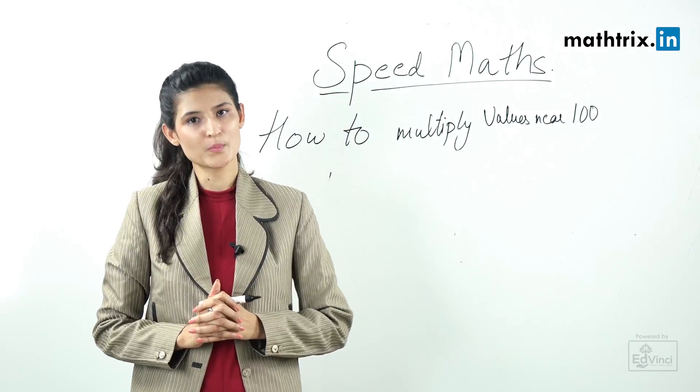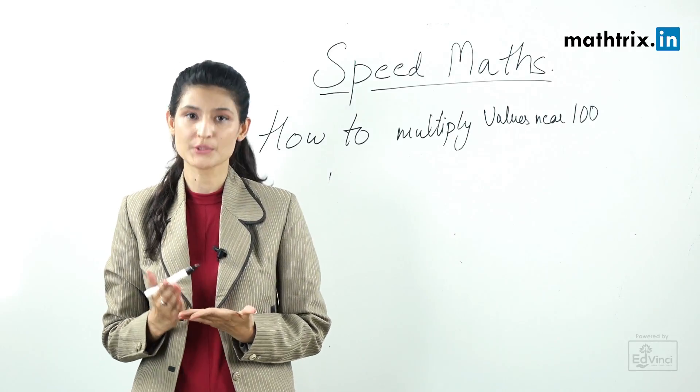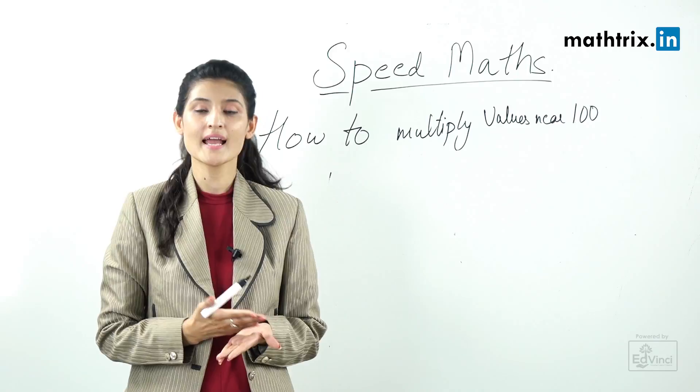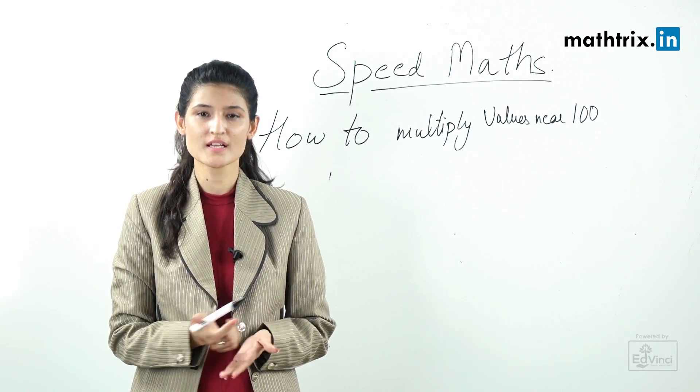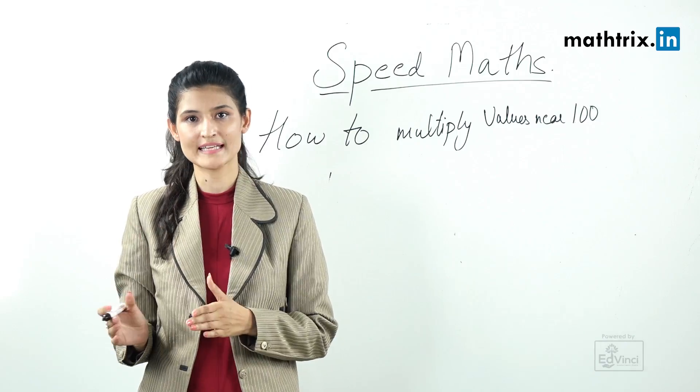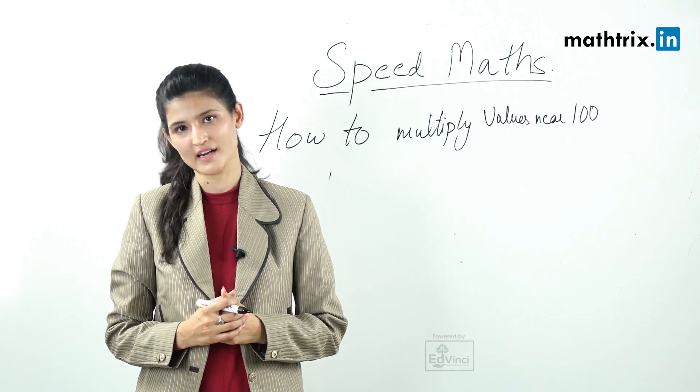When multiplying values near 100 there are three cases: values which are greater than 100, values which are less than 100, and one value plus 100 and one minus 100. In this class we will discuss values greater than 100.